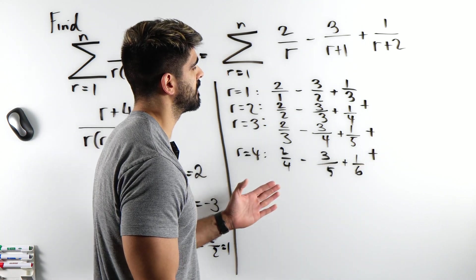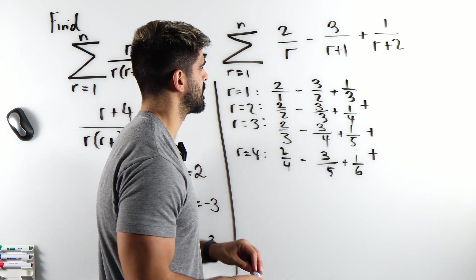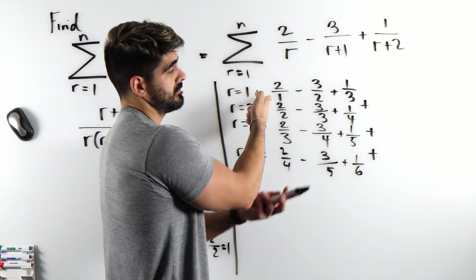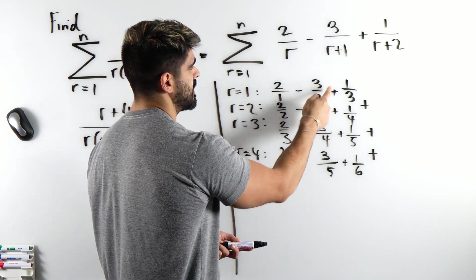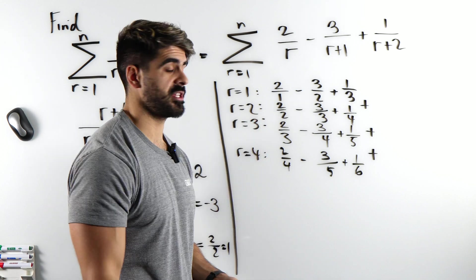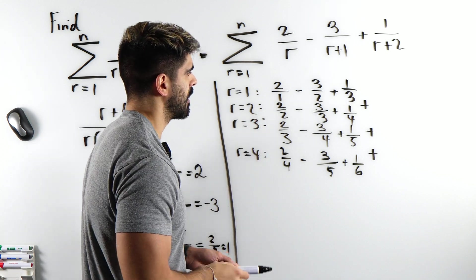I'm going to compare all the terms with the same denominator. For example, this has over 1, it's not going to simplify or anything, but this is over 2. Minus 3 over 2 plus 2 over 2 does not actually cancel. However, when I look at the 3s,